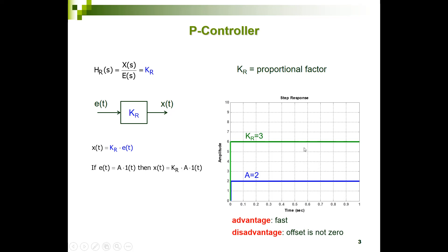The advantage of a P controller is that it's a fast controller, but the disadvantage is that the offset — the error in a static situation — is not zero, so you always have an offset.